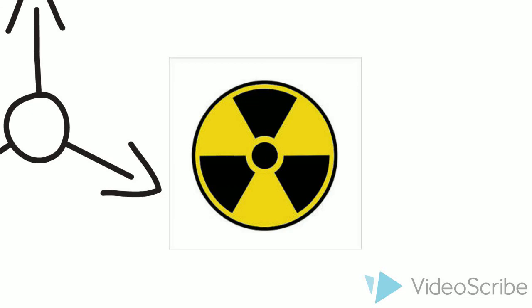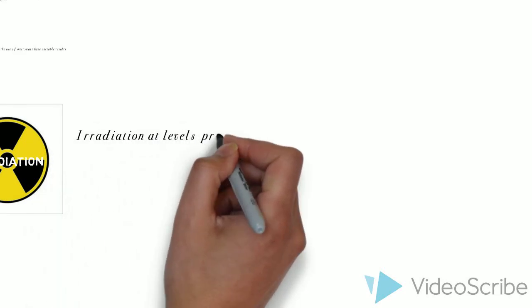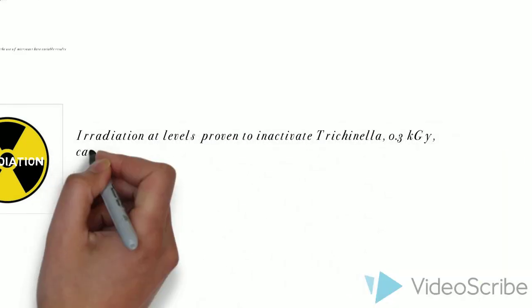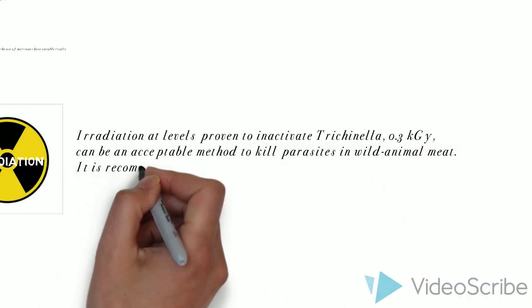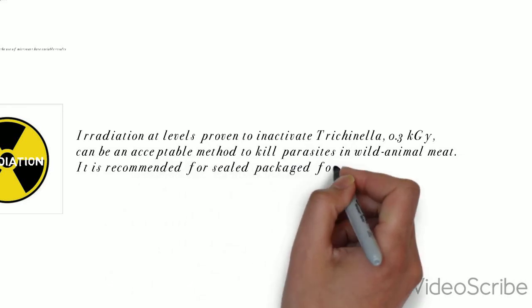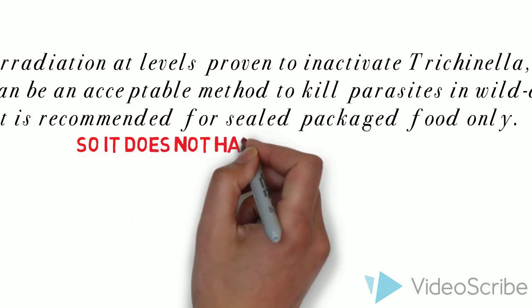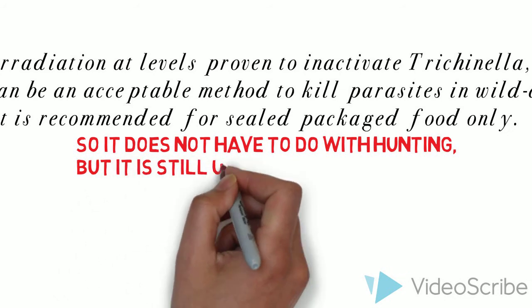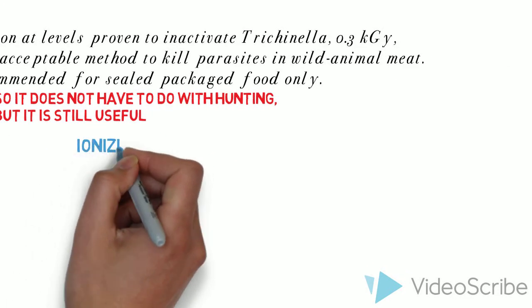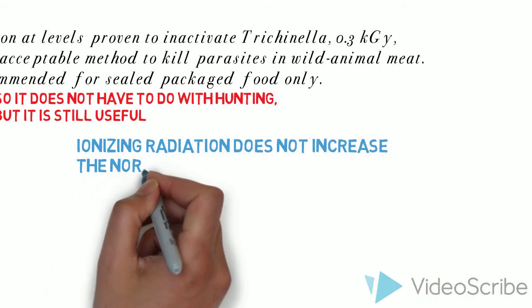The third main method used is irradiation. So, at 0.3 kilograys it is proven to inactivate Trichinella and it is accepted as a method to kill parasites in wild animal meat. This method is recommended for sealed packaged food only. It uses ionizing radiation including high-energy gamma rays and the process involves exposing the food product to carefully controlled amount of ionizing radiation for a specific time to destroy the parasite.